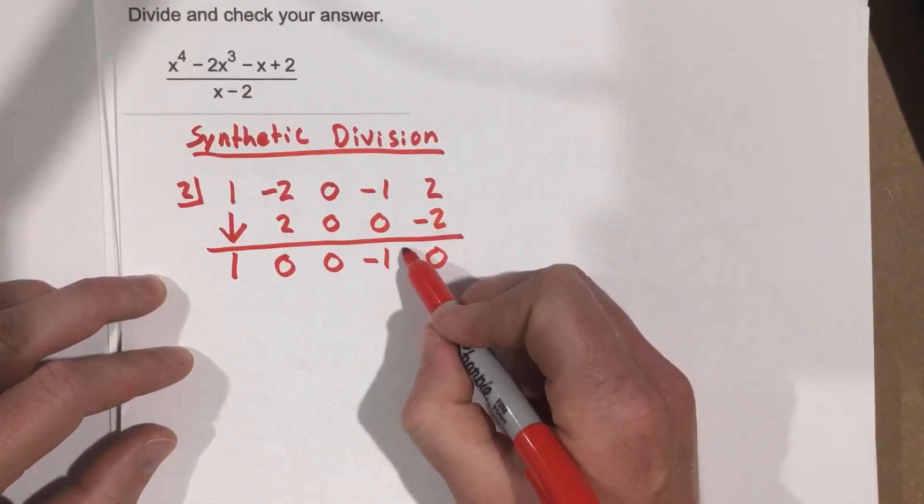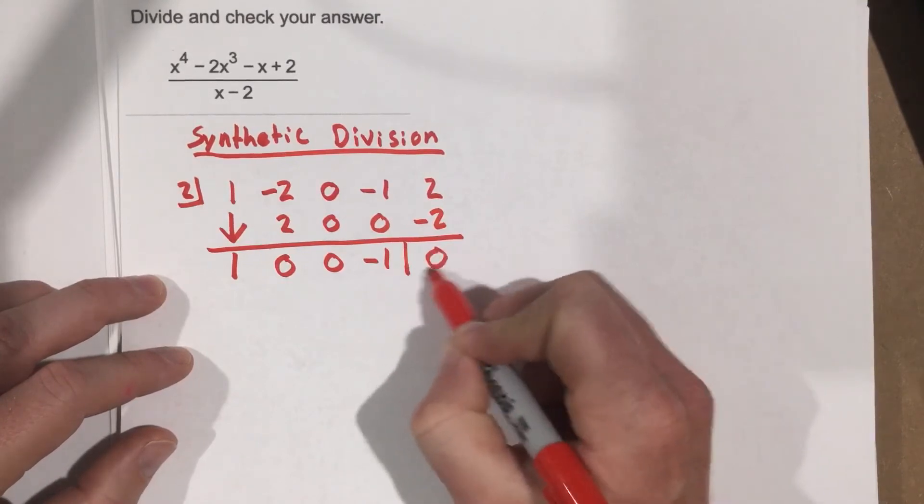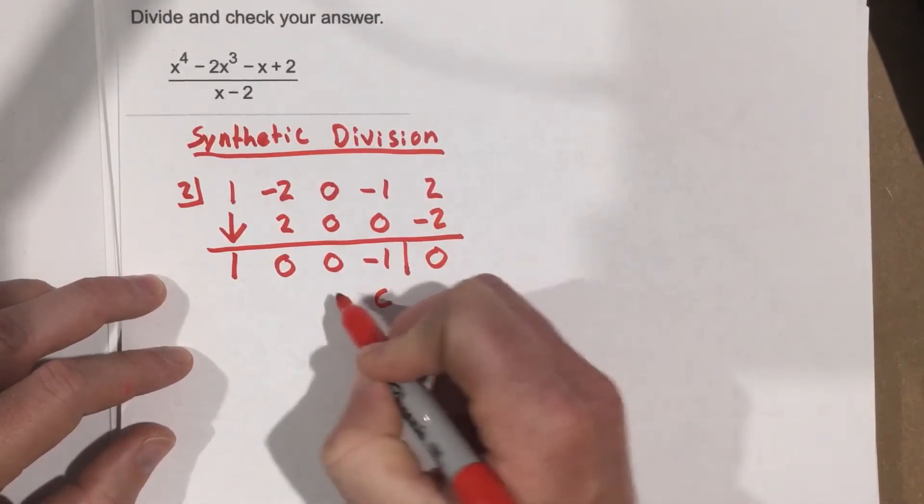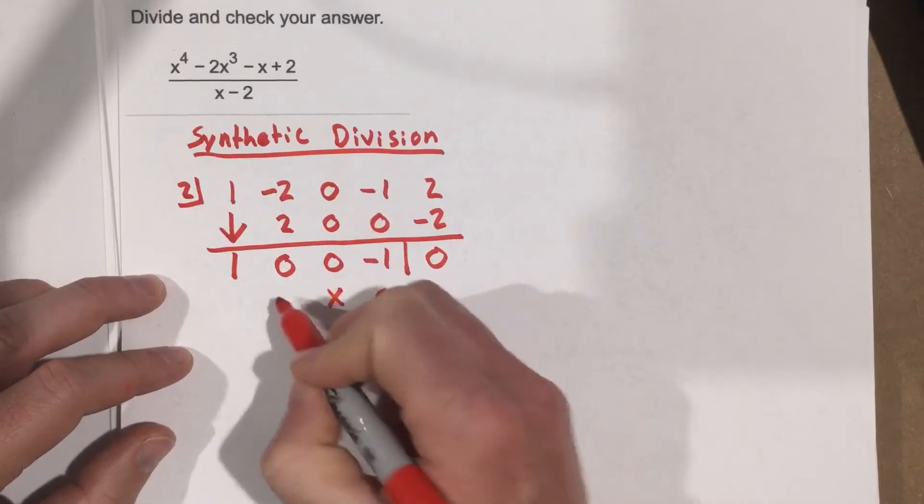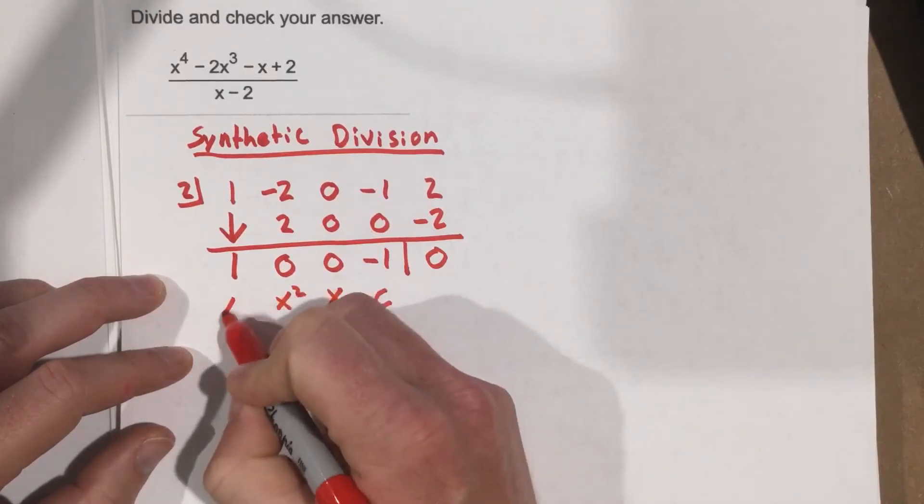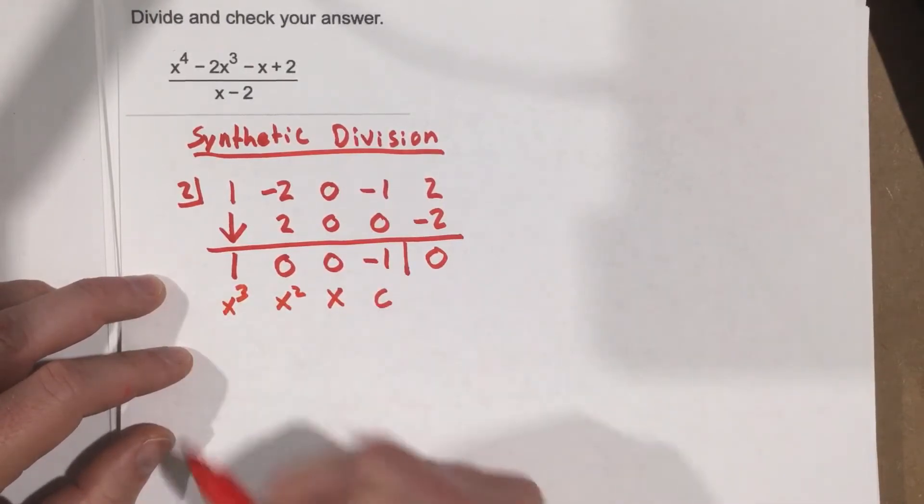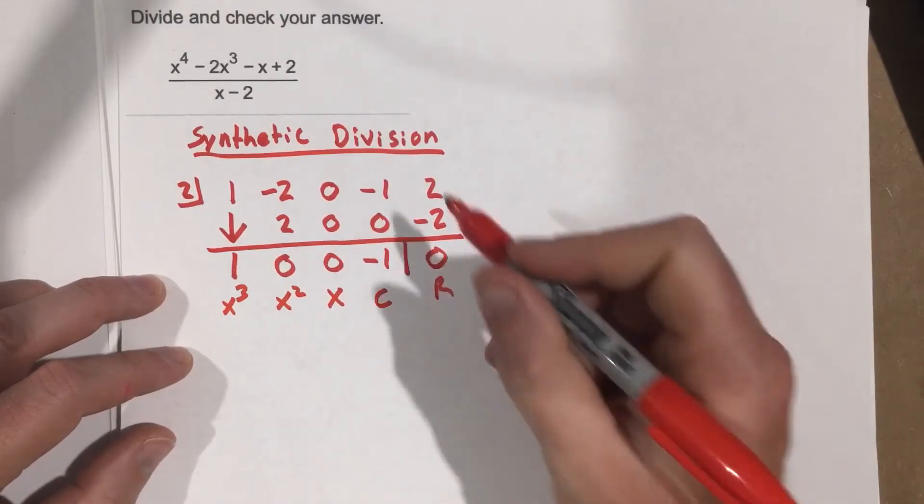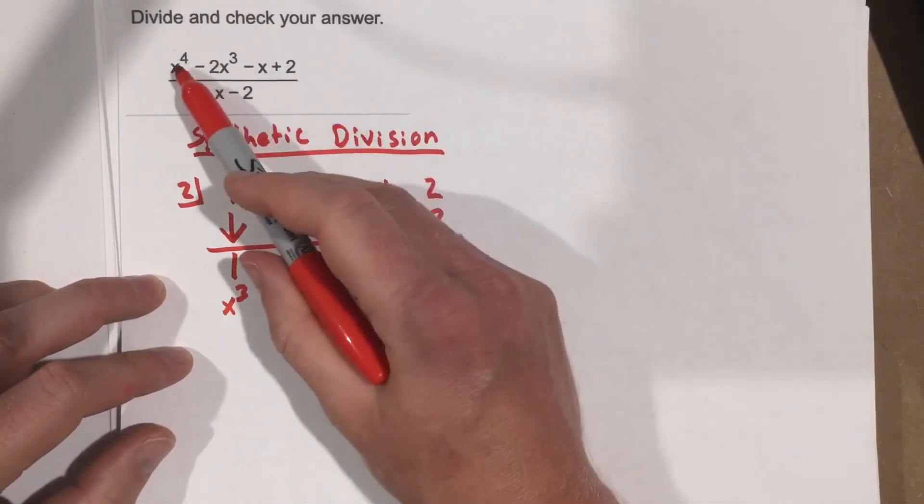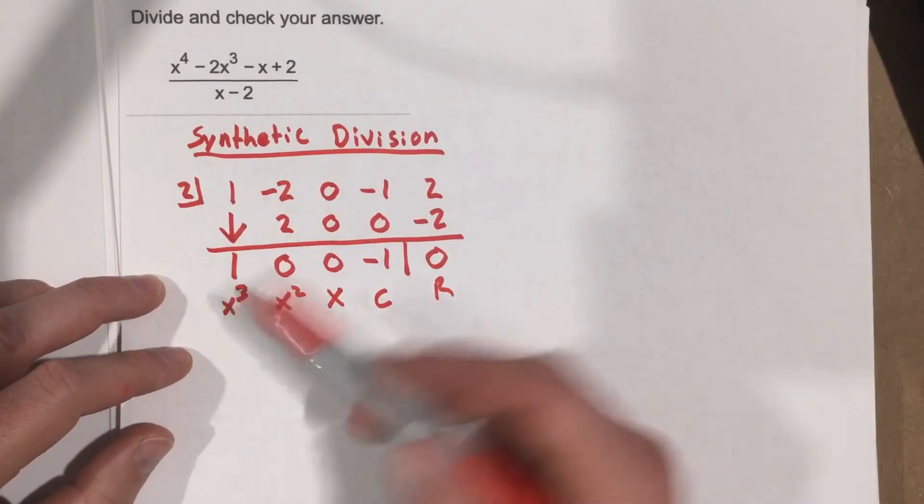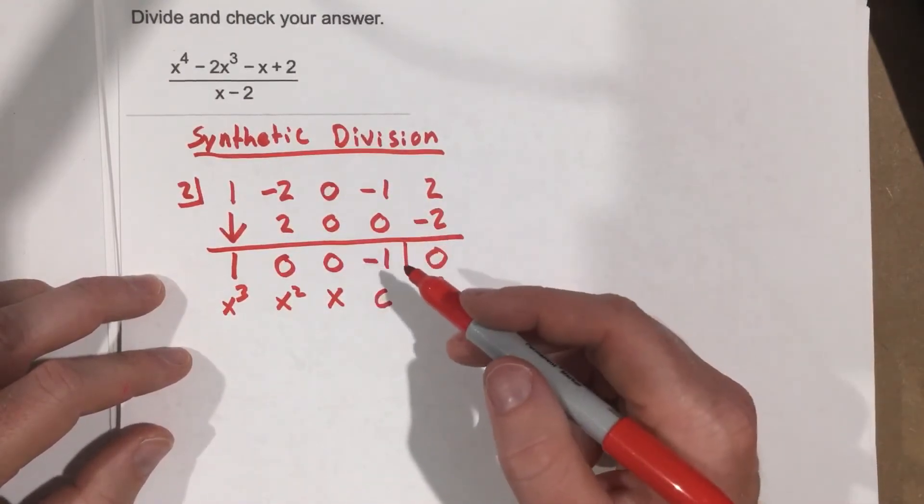So remember, this is the remainder term. Right here, this is our constant term. This would be our x term, our x squared, and our x cubed. We kind of work our way backwards there. I'll put remainder term right there. And we know when we take x to the 4th over x, we're going to have x cubed as our first one. That just makes perfect sense.